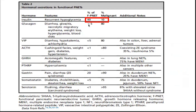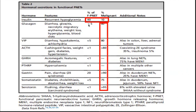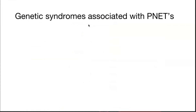Coming to pancreatic neuroendocrine tumors — the most common functional pancreatic neuroendocrine tumor is insulinoma, with an incidence of 40%, of which only 10% is malignant. On the contrary, the other functional pancreatic neuroendocrine tumors are relatively very rare but when present are mostly malignant, and may be associated with carcinoid syndrome, MEN syndrome, and NF1.